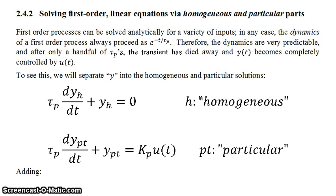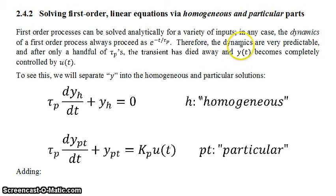In this screencast we're going to talk about how to solve first-order linear differential equations via the homogeneous and particular parts. There are about five or six different ways to solve first-order linear homogeneous and non-homogeneous differential equations, but we're going to focus on how to split up the equation into the homogeneous and the particular parts. The reason is that the dynamics of a first-order process are always e to the minus t over tau p, so the dynamics are very predictable. After only two or three time constants, the transient dies away and y of t becomes basically completely controlled by your input u of t. So we're going to separate our standard form equation for y into the homogeneous and particular solutions.